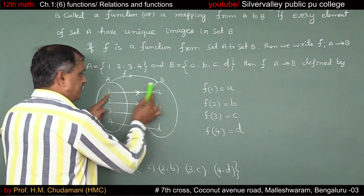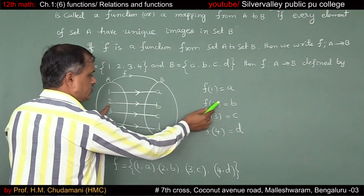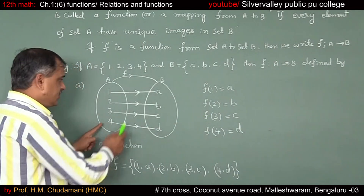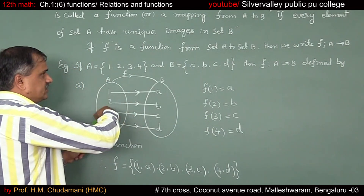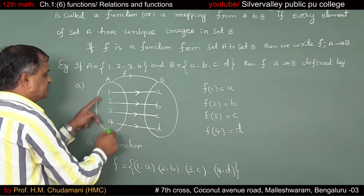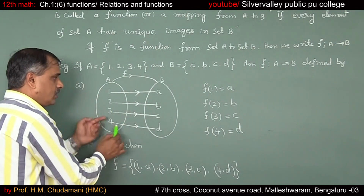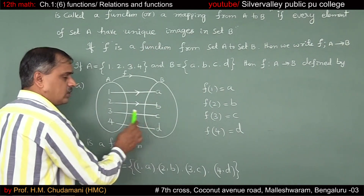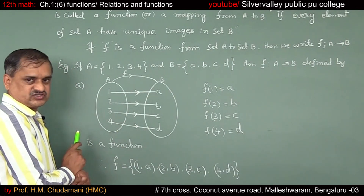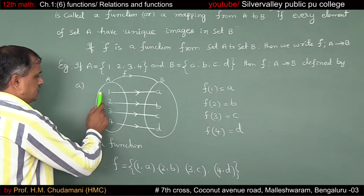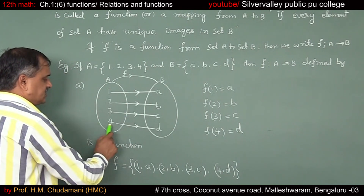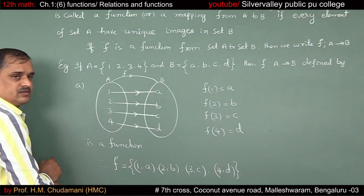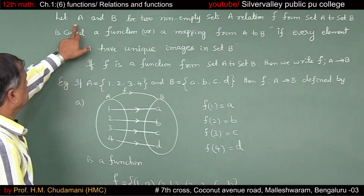That means F(1) = A, F(2) = B, F(3) = C, F(4) = D. Every element of the set A — 1, 2, 3, 4 — are pre-images, whereas A, B, C, D are images. Every element of the set A has unique images in set B. That is why it is a function. Let me see the definition.